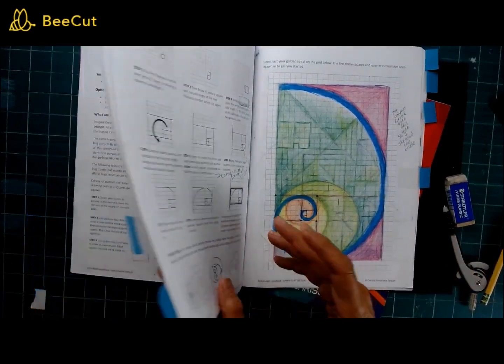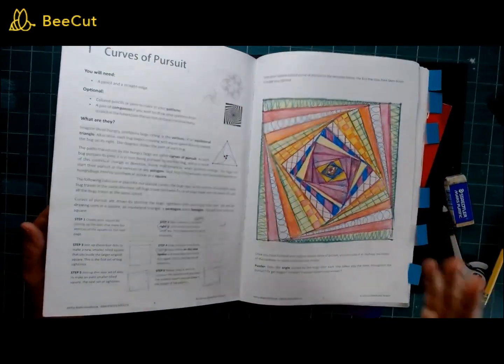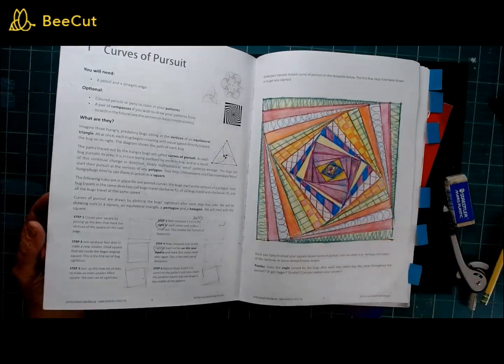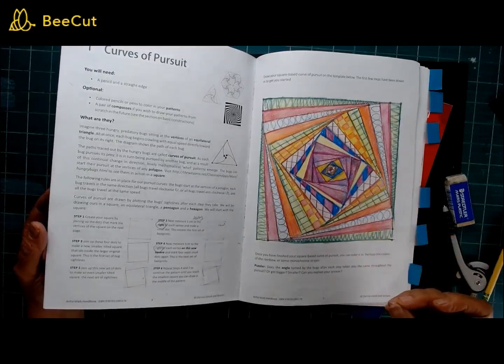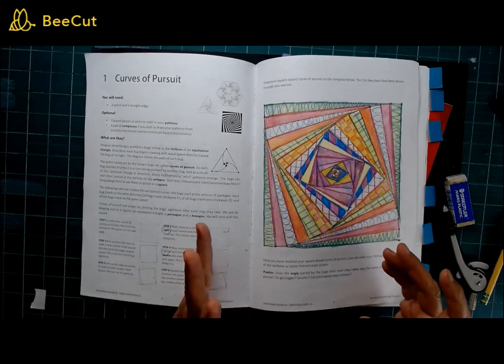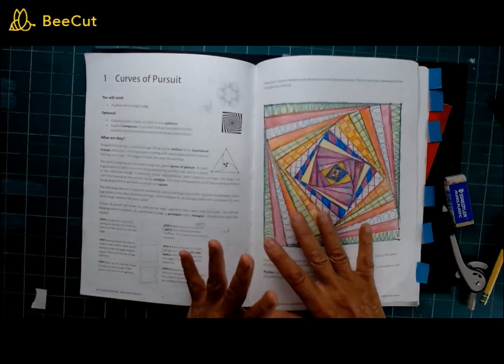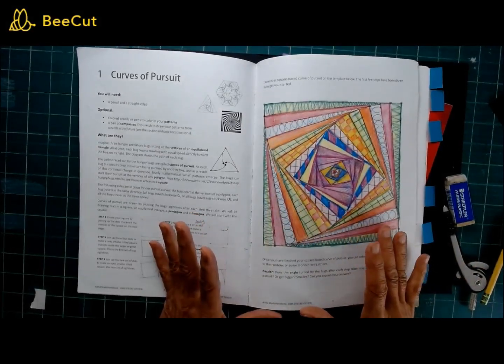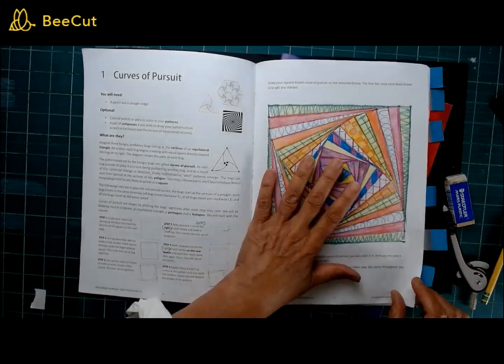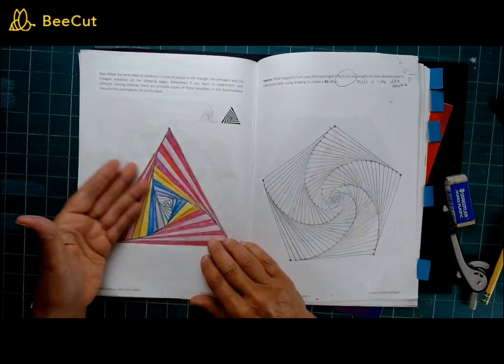Curves of pursuit. I have played around with curves of pursuit a little before. I like them, but I never really got intimate with them like I did in this book, because she has a bunch of them and I really got to know and understand them. Again, this is one of those things that have you follow a very specific direction and you can do infinite number of different things with them. So she starts out with a square one and goes into the triangle one, which is just beautiful.